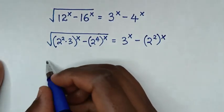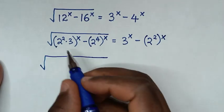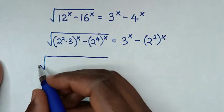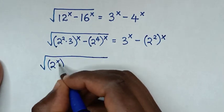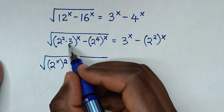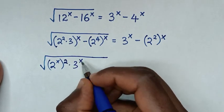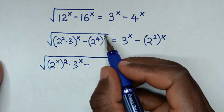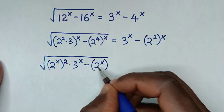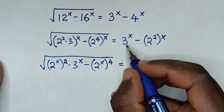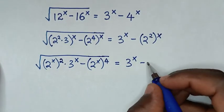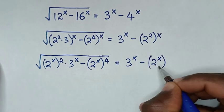In the next step, we take the power of x inside each bracket. So 2^(2x) is the same as (2^x)² outside the bracket, then times 3^x. For the minus term, taking power of x inside gives (2^x)⁴. On the right side, 3^x minus (2^x)².